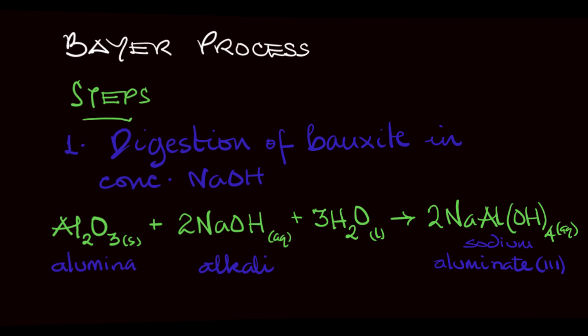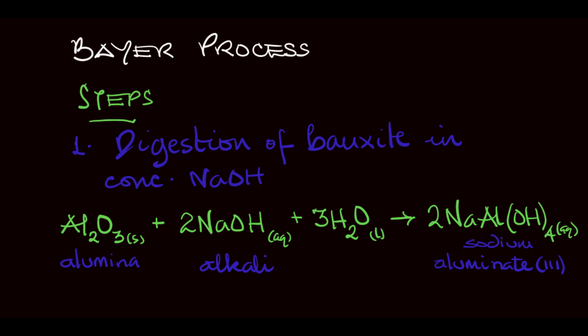Let's look at the Bayer process. The first step involves digestion of bauxite in concentrated sodium hydroxide or in an alkali. We need to do this because we want to separate the impurities, which is iron(III) oxide, from alumina. Alumina is the substance that contains aluminum from which it will be extracted through electrolysis. So we need to obtain that alumina from the bauxite, and in order to do that we have to separate it from iron(III) oxide using an alkali.